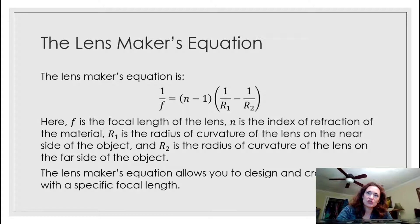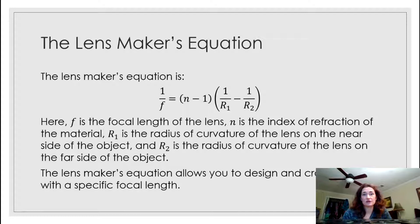R1 is the radius of curvature of the lens on the near side of whatever object you're trying to look at, and R2 is the radius of curvature on the far side. The lens maker's equation allows you to design and craft a lens with a specific focal length, which is essential if you're designing something for a specific application like someone's eyeglasses.